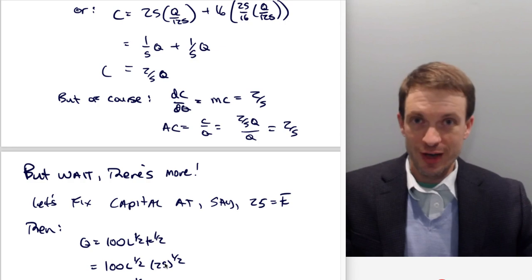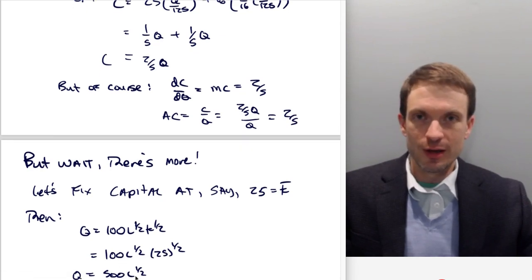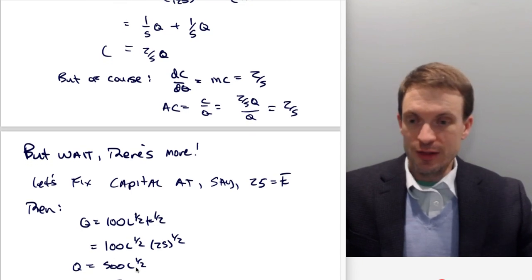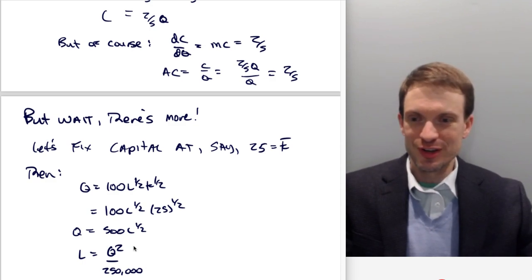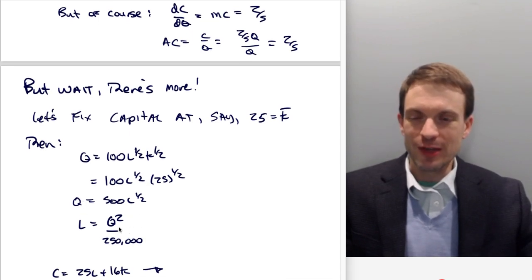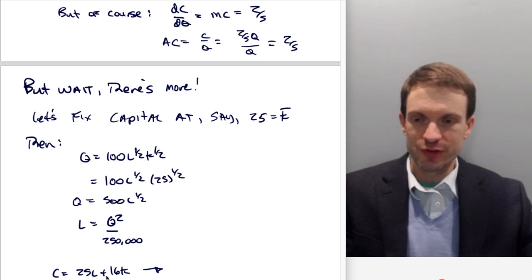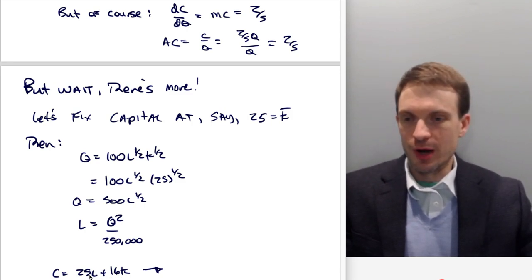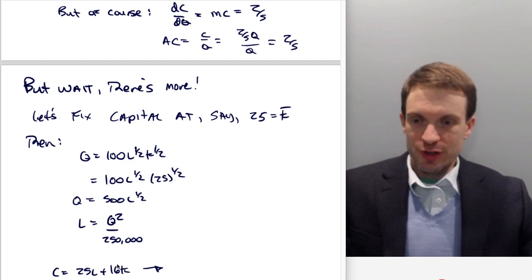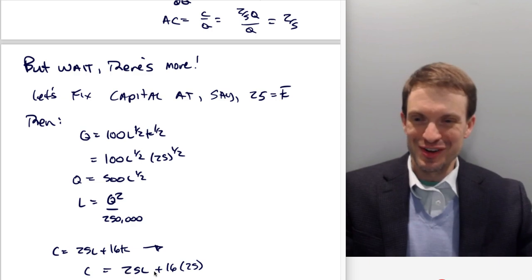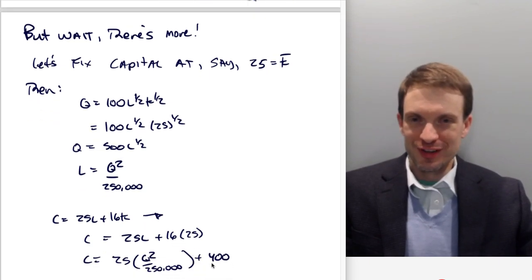Let's fix capital at say 25. And so when I go to my production technology, I'm going to drop in 25 instead of K. And so we'll have square root of 25, that's five times a hundred is 500 times the square root of L. And so solving for labor again, solving for L, we have L equals Q squared over 250,000. And now we've got something that looks like a cost function or something that's going to give us the basis to be able to get something that looks like a standard cost function.